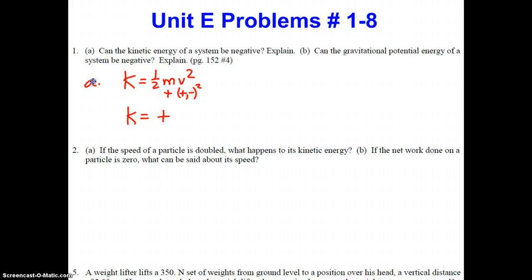For B, can the gravitational potential energy of a system be negative? Let's start with the equation: U_G = mgh. Mass is always positive, as discussed. The acceleration due to gravity is always directed downward with a standard value of 9.8 m/s², but really the answer depends on the H value. Let me explain that.